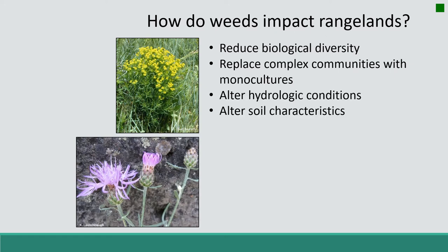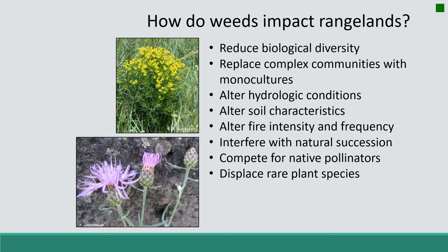Weeds can alter hydrologic conditions or alter soil characteristics, which we'll discuss when we talk about salt cedar. They can also alter fire intensity and frequency — we always talk about the cheatgrass wildfire cycle, where cheatgrass dries quickly and makes rangelands very flammable, burns, and then comes back after fire. They interfere with natural succession, compete for native pollinators, and can displace rare plant species. All of these things negatively impact rangelands.